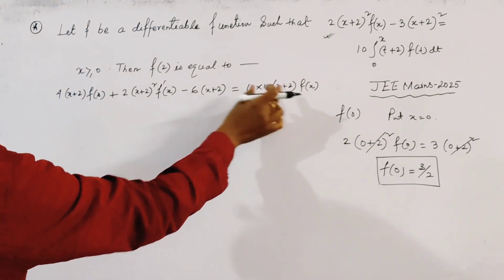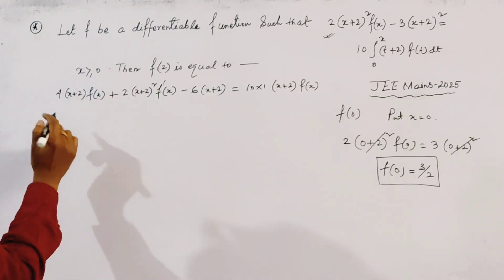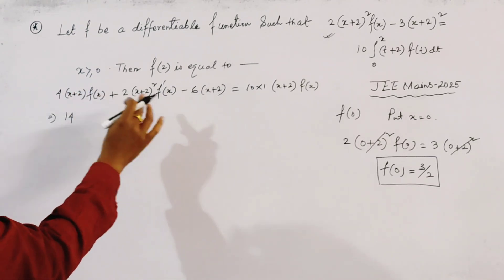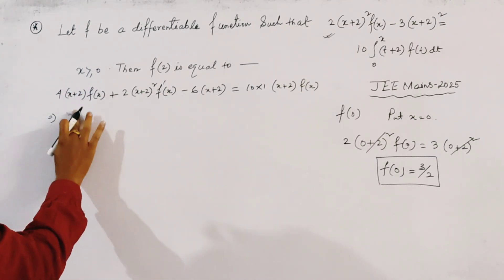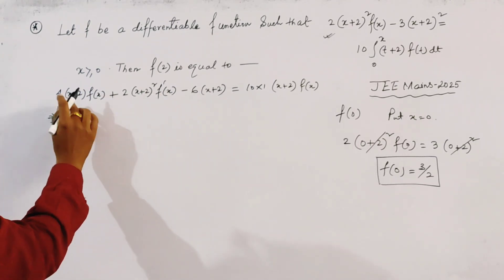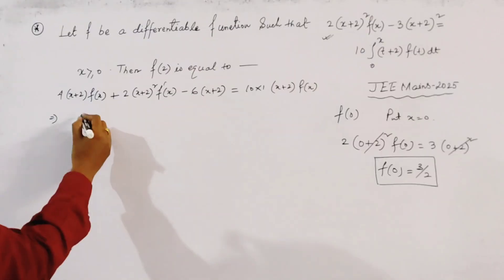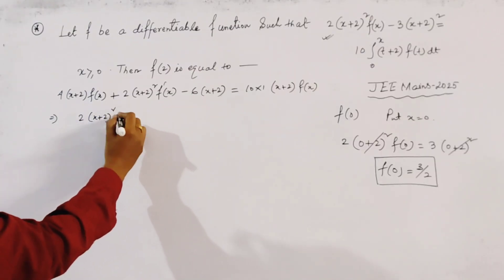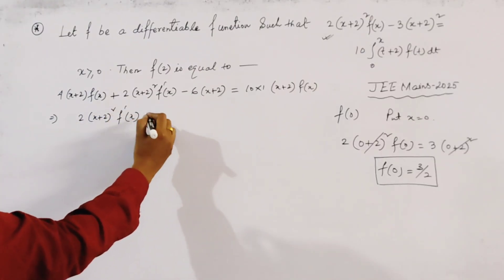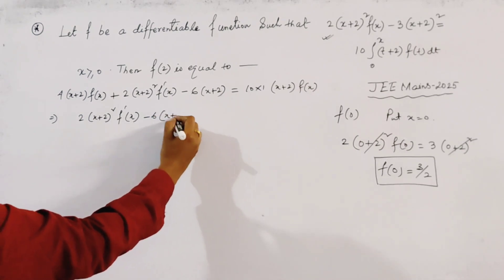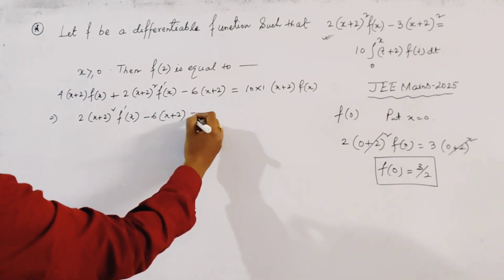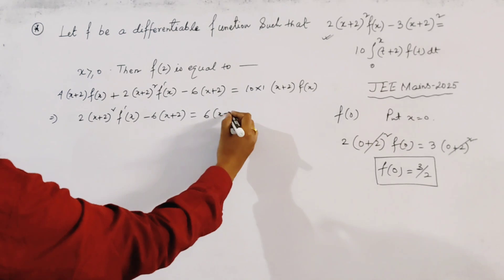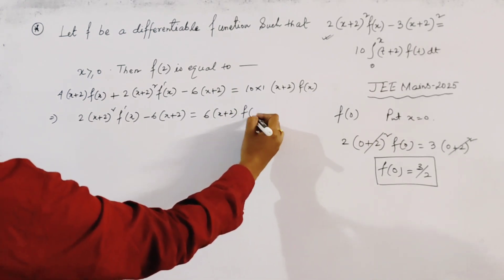Collecting and rearranging the terms, we write the result as: 2(x+2)²·f'(x) − 6(x+2) = 6(x+2)·f(x), after combining the 4(x+2)·f(x) term from the left with the 10(x+2)·f(x) from the right side.